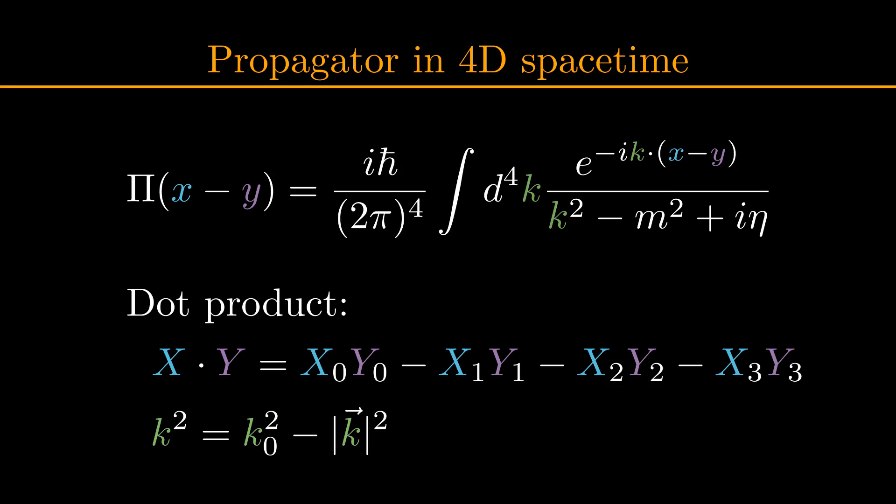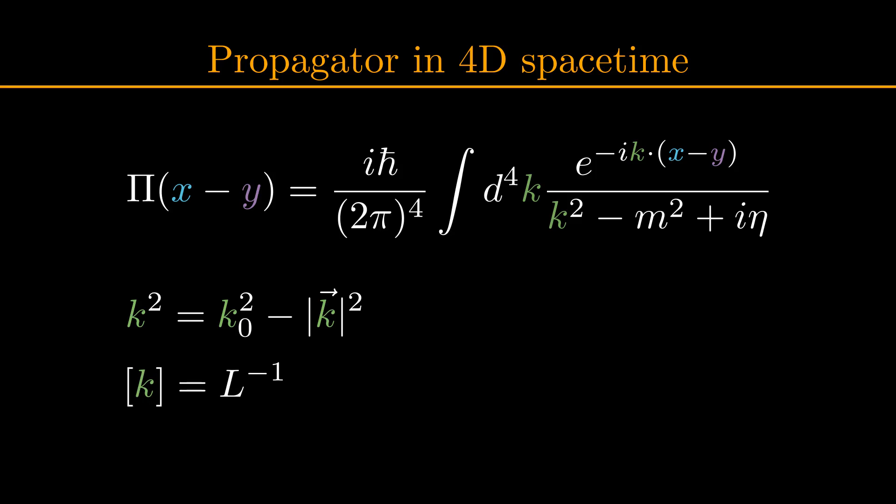In order for the exponential to be unitless, we need the k4 vector to have units of inverse length, so it is similar to the angular wave number in a normal wave equation, and it is related to the momentum of the field. The term i times eta in the denominator is added to make sure we obtain physical results instead of quantum fields that oscillate infinitely fast, but it will get a physical meaning in this video as well later on.